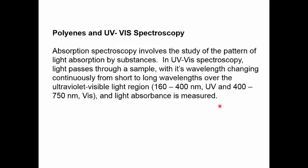Absorption spectroscopy involves the study of the pattern of light absorption by substances. In UV-Vis spectroscopy, light passes through a sample. The instrument will change the wavelength continuously from short to longer wavelengths. It scans the region from 160 all the way up to 750 nm. The ultraviolet region is from 160 to 400 nm and the visible from 400 to 750 nm. And over that whole range, the instrument measures regions where light is absorbed.